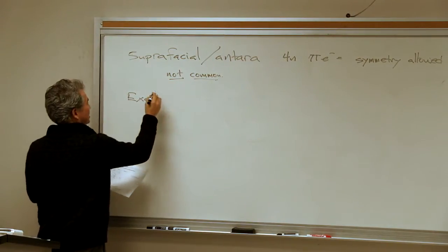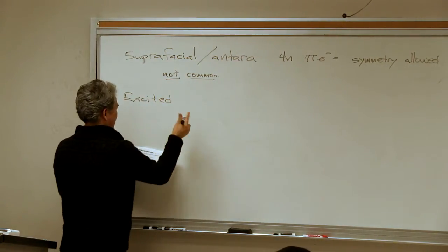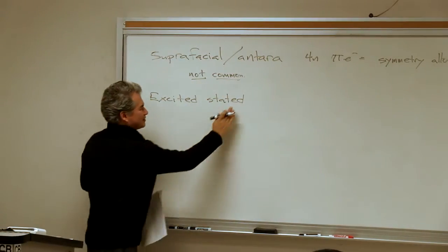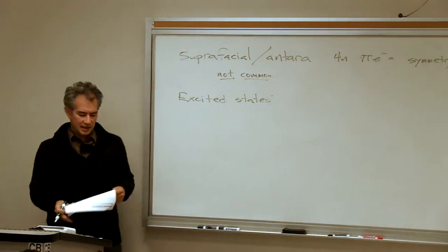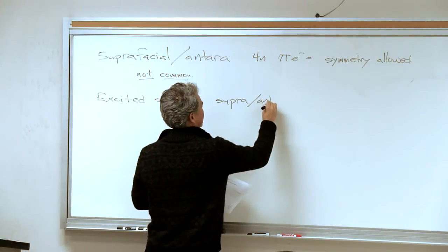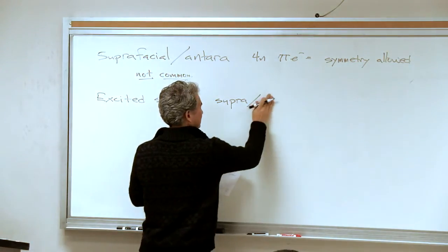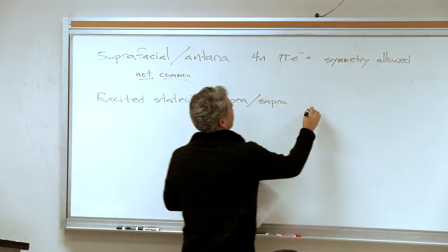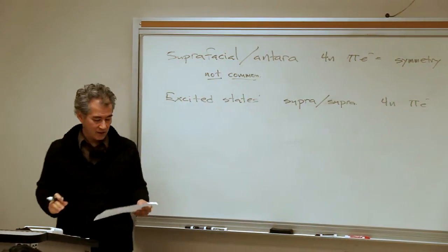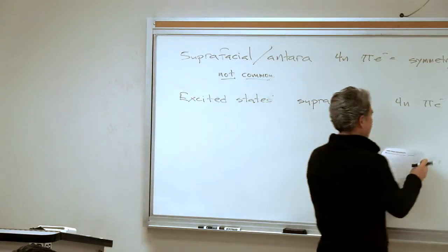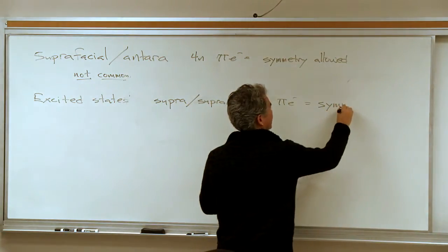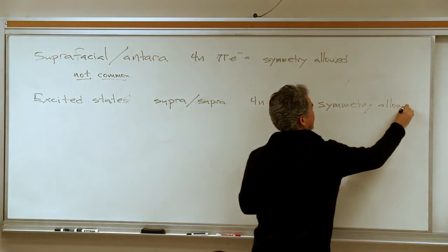The other way to go beyond the 4n+2 rule is to do photochemistry — to generate some sort of an excited state. If one of your components is in an excited state, then it's easy to have 4n pi electrons involved in the transition state of a pericyclic cycloaddition. This would also be symmetry-allowed.